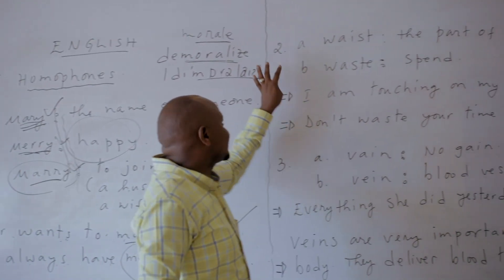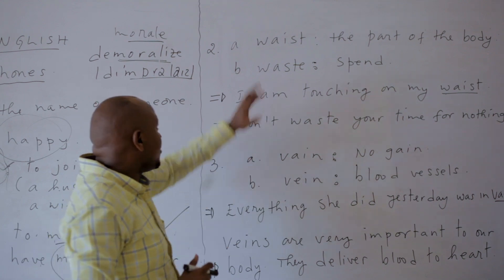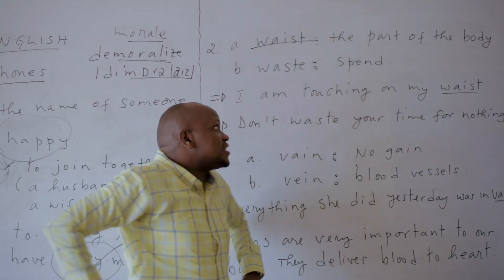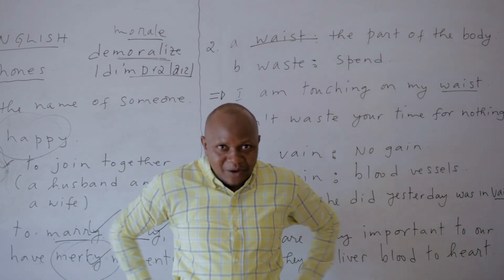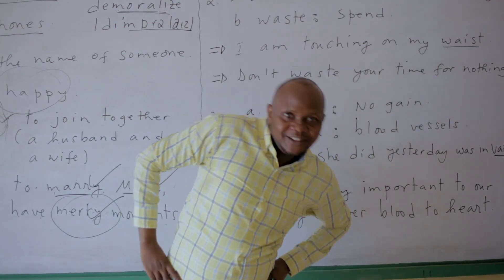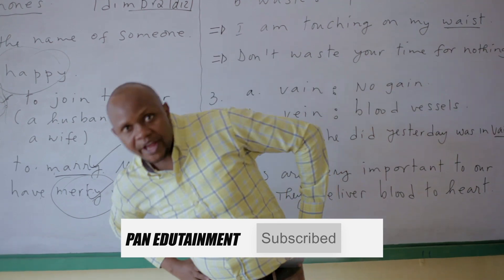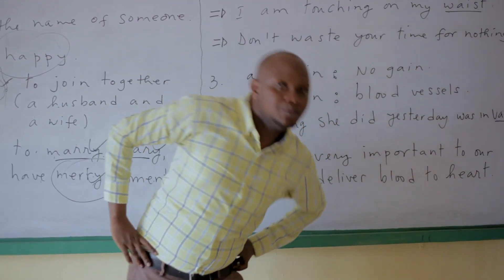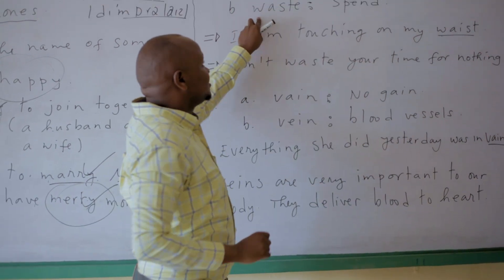Then here we have the second homophones: 'Waist' and 'Waste.' The waist is a part of the body — here, I am touching my waist. Even stretching myself to show you where the waist is located — it is here. This is the waist, the middle part of the body.